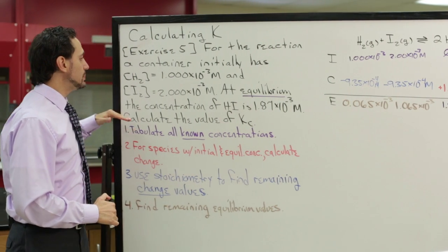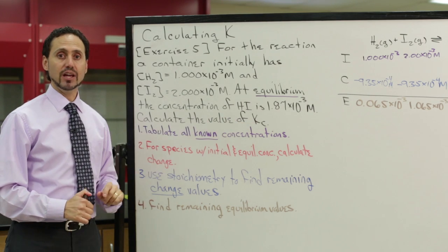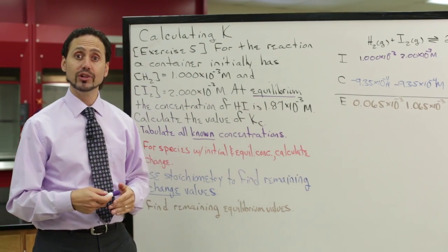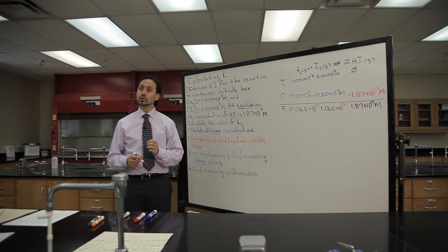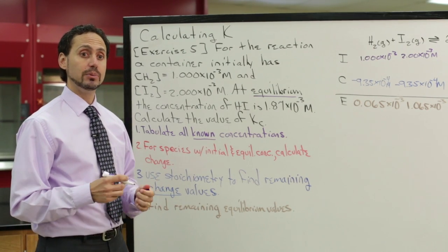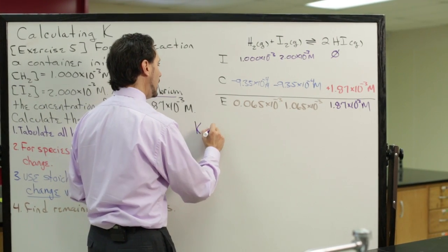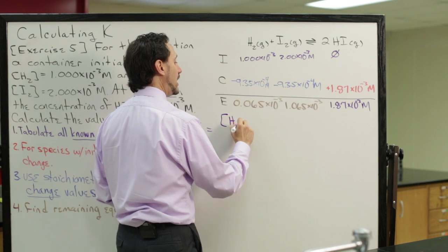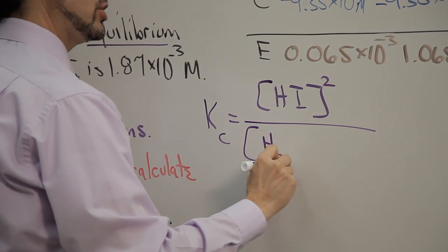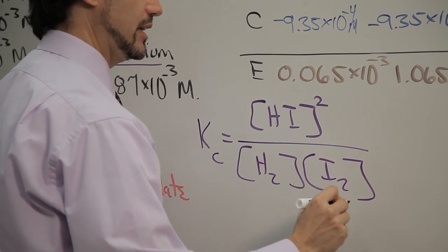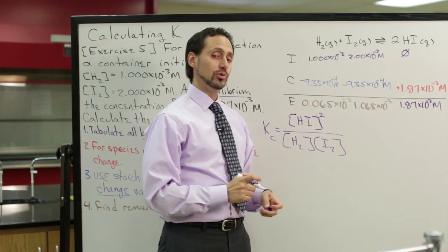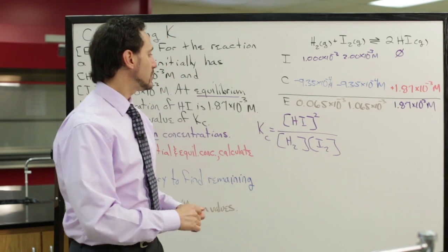All we have left to do is plug in the equilibrium values to calculate Kc. The tool we need is the equilibrium constant expression. Kc equals the concentration of hydrogen iodide gas squared — because of the coefficient of 2 — divided by the concentration of hydrogen gas times the concentration of iodine gas. That's our equilibrium constant expression, and now we can plug in the equilibrium values.